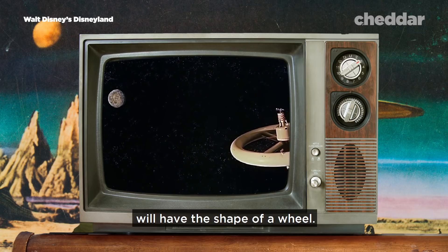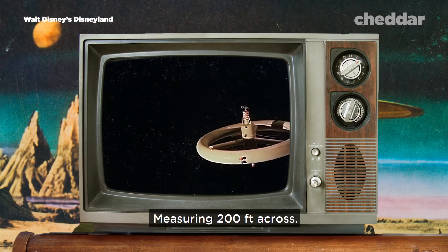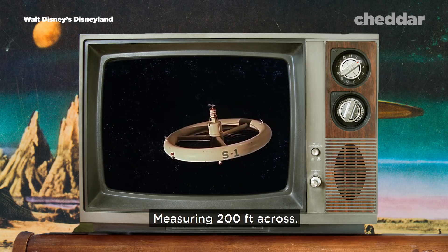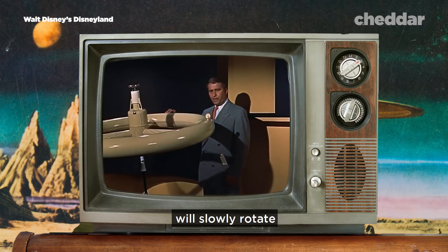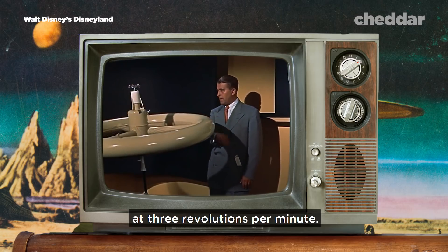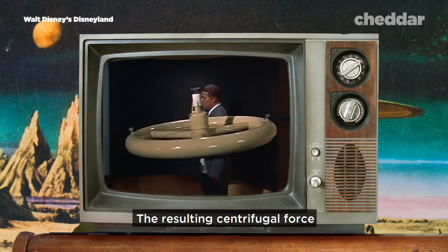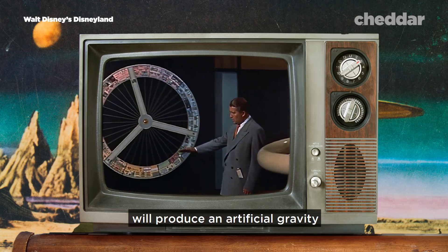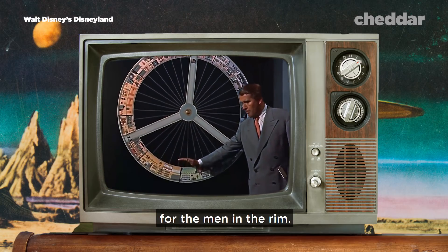Our space satellite will have the shape of a wheel, measuring 200 feet across. The entire wheel will slowly rotate at three revolutions per minute. The resulting centrifugal force will produce an artificial gravity for the men in the rim.